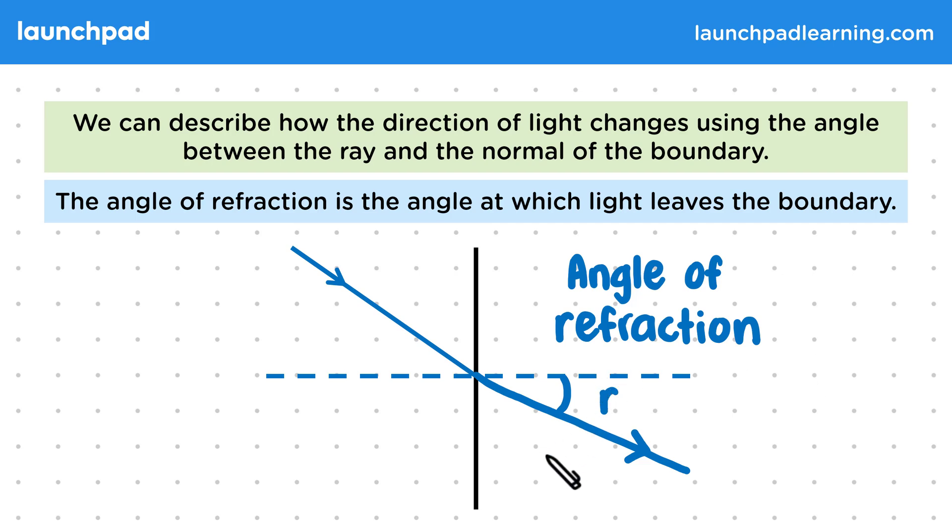If this ray bends away from the normal, then this will be larger. We can also use the letter r to represent this angle. At GCSE, you won't be expected to be able to calculate a refracted angle for a given angle of incidence and vice versa, but you should be able to identify and label these angles on a diagram.